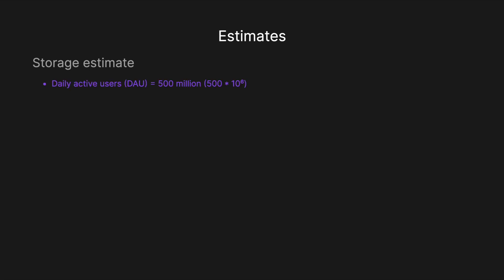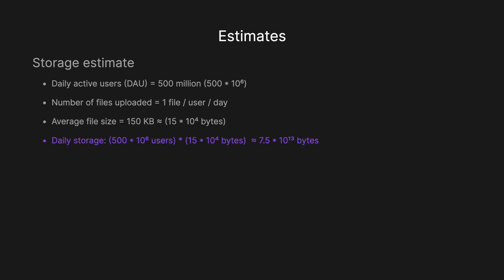For our storage estimates, we'll assume 500 million daily active users — 500 × 10^6. We assume one file uploaded per user per day, and the average file size is 150 kilobytes, roughly 15 × 10^4 bytes. For daily storage, we multiply 500 million users by 150 kilobytes, which gives us roughly 7.5 × 10^13 bytes.